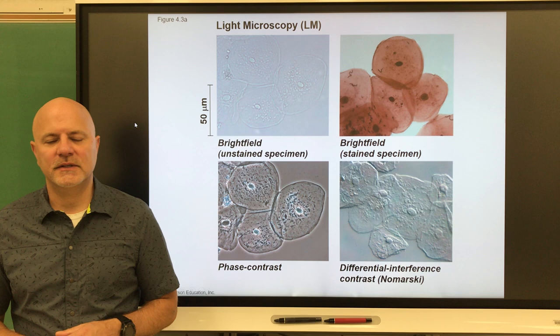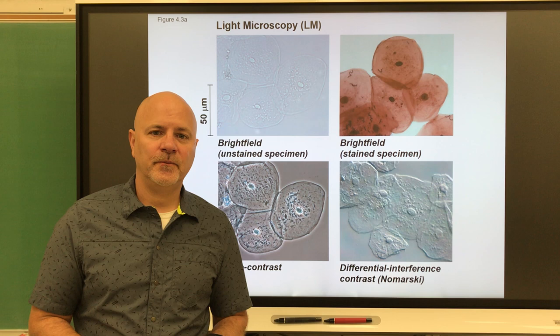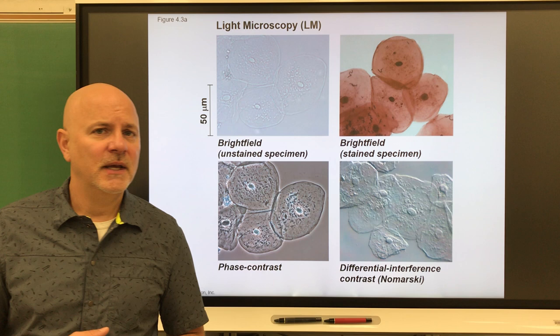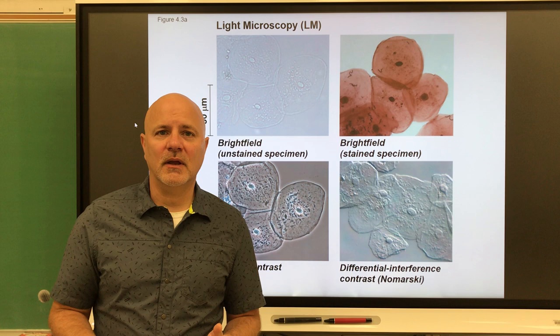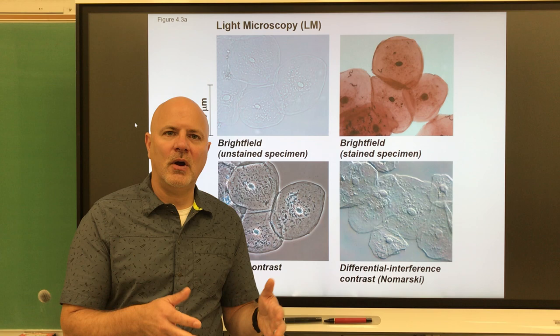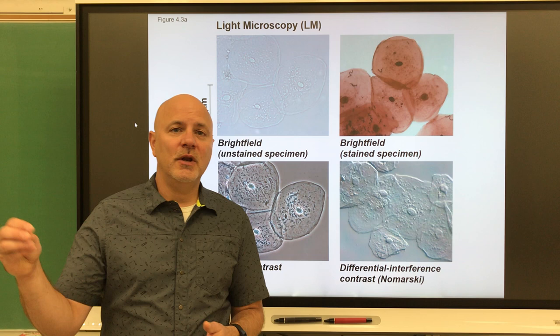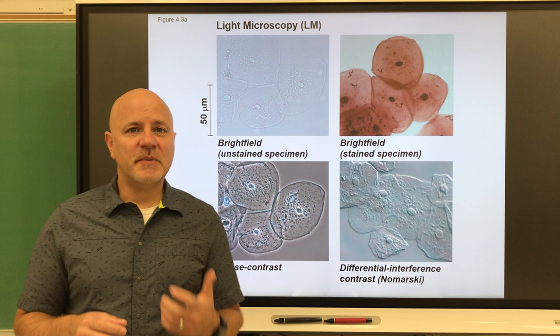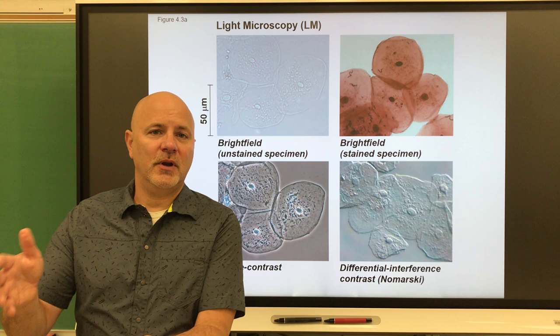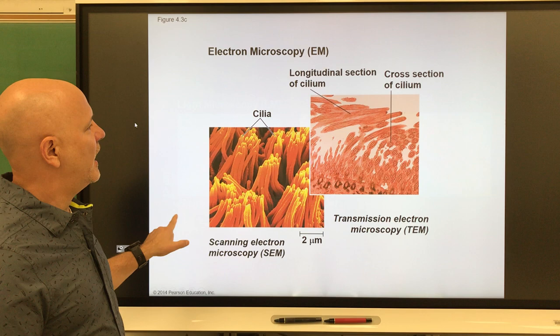Next, Rudolf Virchow stated that all cells come from pre-existing cells, building on the biogenesis theory that all life comes from pre-existing life. This contrasted with spontaneous generation — the idea that life can arise from non-living materials — for example, that meat left out would produce maggots, or hay in a barn would produce mice. We know today that flies land on meat and lay eggs. Spontaneous generation was disproved by Louis Pasteur, who did simple experiments like putting meat under a jar and observing flies laying eggs on uncovered meat.